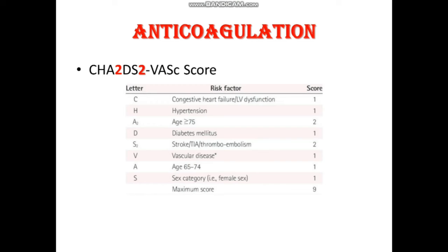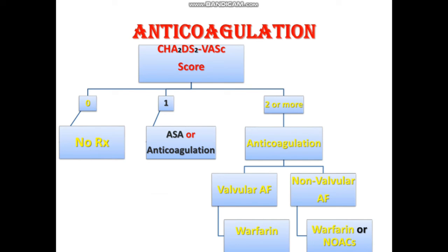All patients with atrial fibrillation must be anticoagulated based on their CHA2DS2-VASc score. C stands for congestive cardiac failure, H for hypertension, A for age over 75 (2 points), D for diabetes, S for stroke/TIA/thromboembolism, V for vascular disease such as MI or peripheral arterial disease, A for age 65 to 74 (1 point), and Sc for sex category — female gets 1 point. If the CHA2DS2-VASc score is 0, no treatment is needed. A score of 1 allows either aspirin or anticoagulation. A score of 2 or more requires anticoagulation.